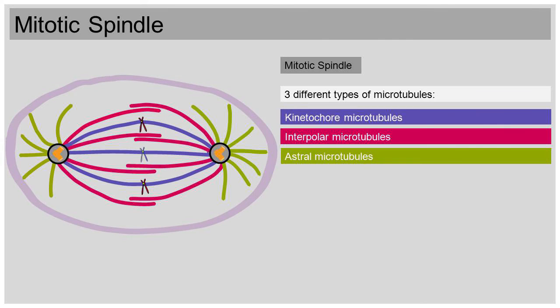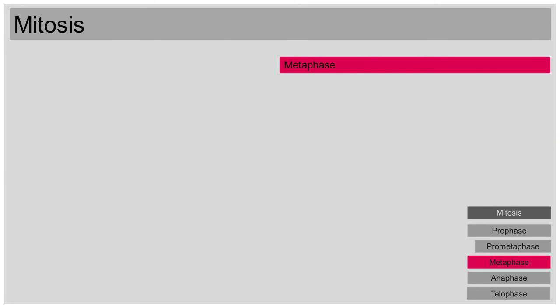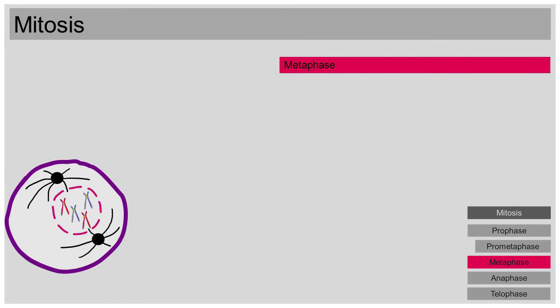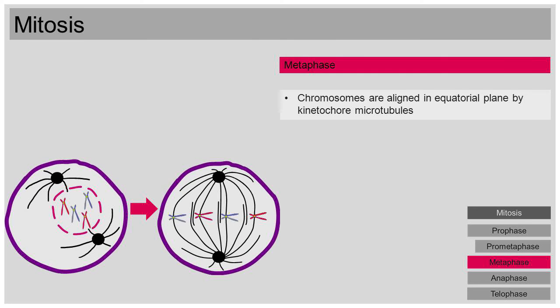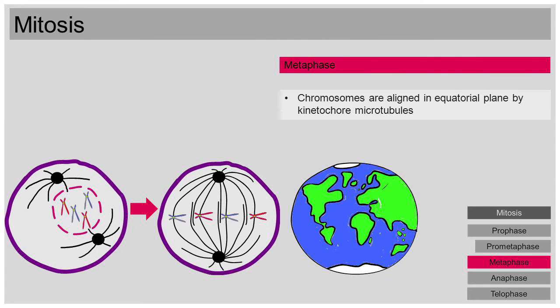Back to mitosis. We'll continue with the metaphase. In prometaphase, the nuclear membrane was dissolved and the mitotic spindle began to develop. Now, in metaphase, the double-stranded chromosomes are aligned in the equatorial plane, the middle of the cell, with the help of the kinetochore microtubules. We can compare the cell to the globe. The cell's poles are the centrosomes and can be compared to arctic and antarctica. If we cut through the globe at the equator, the cut surface would be the equatorial plane of the cell.